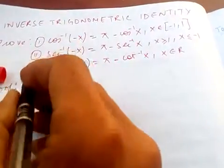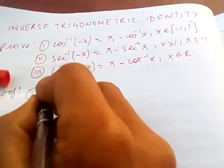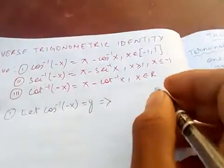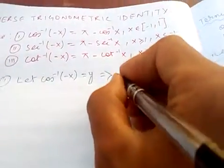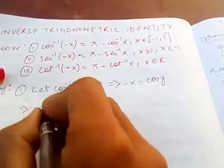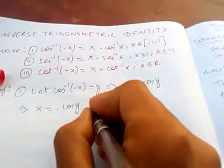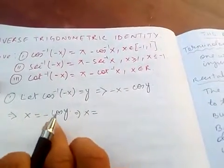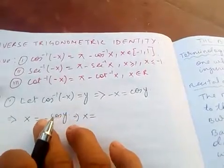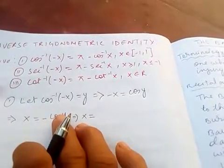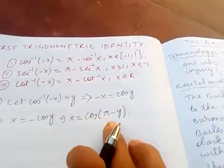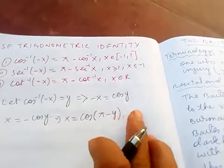Let's prove number one. Let cos inverse of minus x equal y, which means minus x equals cos of y. Multiplying both sides by minus one gives x equals minus cos of y. We know that cosine is negative in the second quadrant, so when cos is pi minus y, that is 180 minus y, that is the second quadrant where cosine is negative.